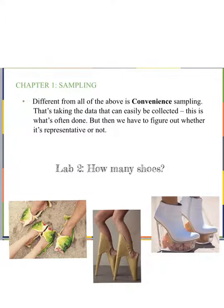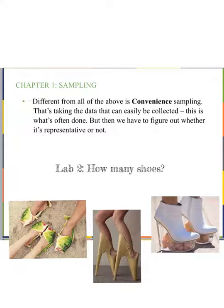The last type of sampling is called convenient sampling. This is the one that most people use because it's the easiest to do. The only thing you have to be careful about is whether it's representative of the population or not. Within lab two, you're going to collect data about how many shoes people have in their closets, and then you're going to use that data to create some statistics. Good luck!